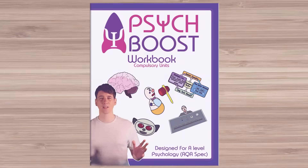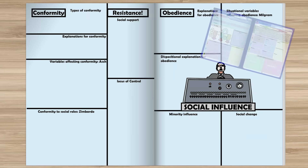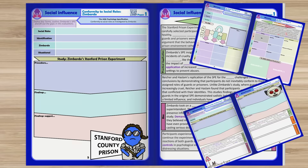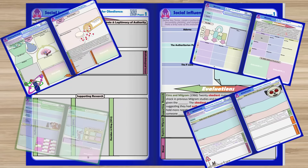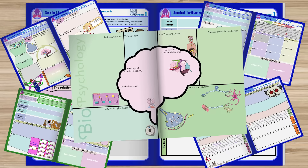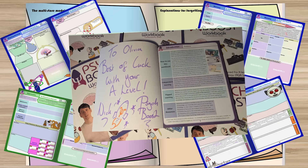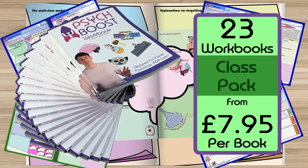You can now follow along by making your notes in my PsychBoost workbook — 150 full colour worksheets covering all the compulsory units. It's on Amazon, or you can get signed editions from my website, and teachers can order packs for the whole class.